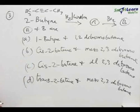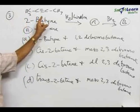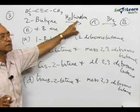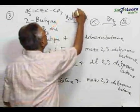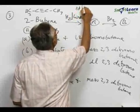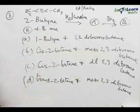This is 2-butyne. 2-butyne can be reduced selectively by means of one catalyst known as Lindler catalyst, that is hydrogenation in the presence of Lindler catalyst. Lindler catalyst is actually hydrogen over palladium and barium sulphate.